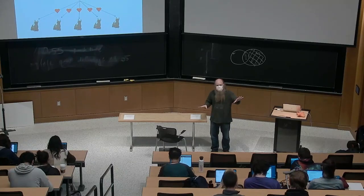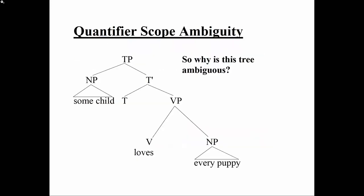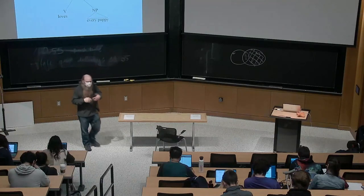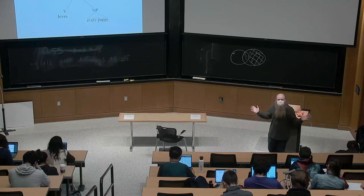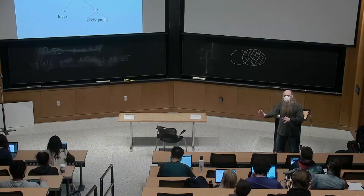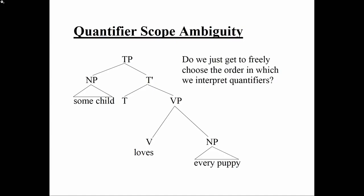The way I've been talking turns out to be a lie, which is interesting. We have good evidence that we don't just freely choose the order in which we interpret quantifiers. What really happens is there is another kind of movement operation. In semantics, there's movement going on — possibly of an even sneakier and weirder kind. There's lots of evidence that the reason this sentence is ambiguous is that there's an optional operation which takes the object 'every puppy' and moves it to a position above 'some child' in the process of interpreting the sentence.